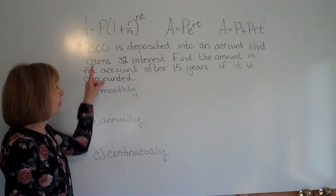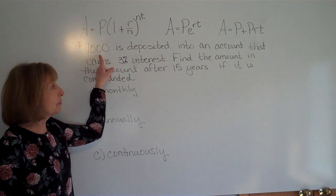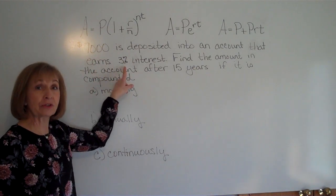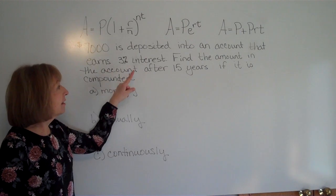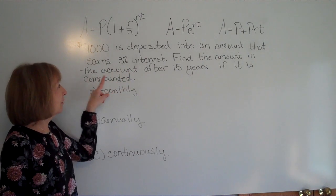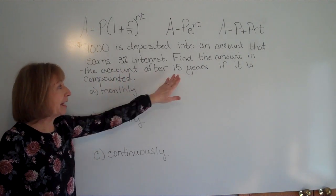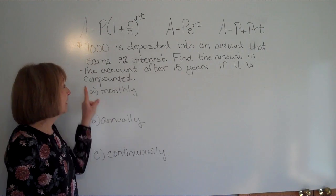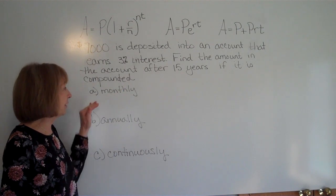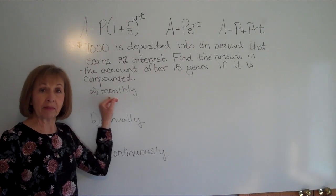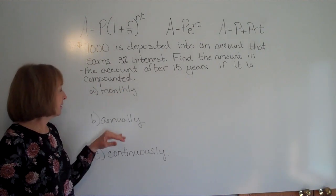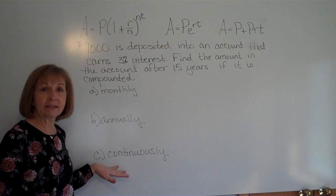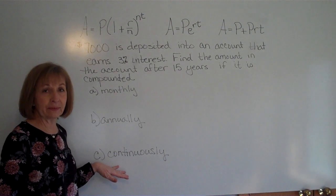For this example, I have $7,000 deposited into an account that earns 3% interest. We need to find the amount in the account after 15 years if it is compounded monthly, annually, and continuously.